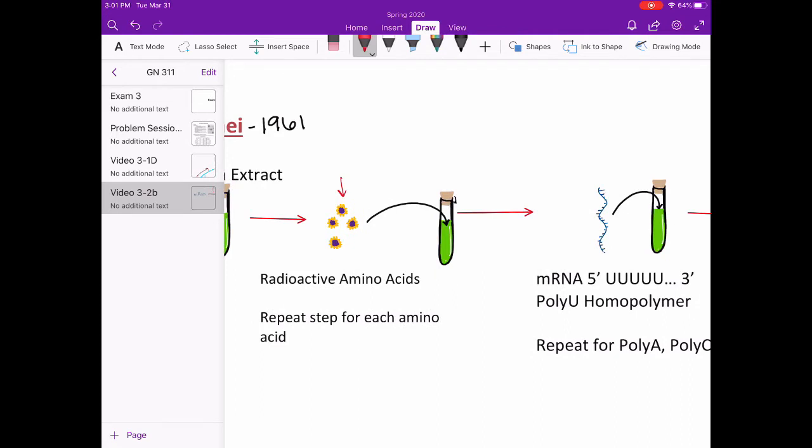This would allow the protein made by the tagged amino acids to also be radioactive. They conducted this experiment for each amino acid requiring several test tubes with a different tagged amino acid in each.